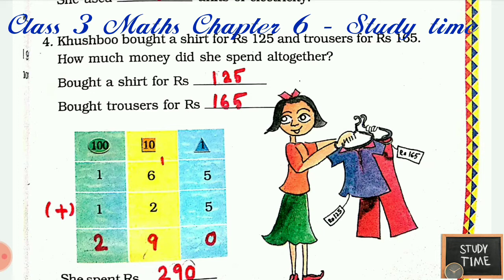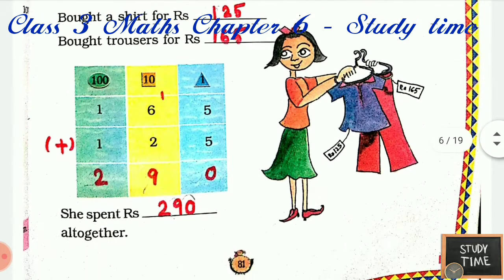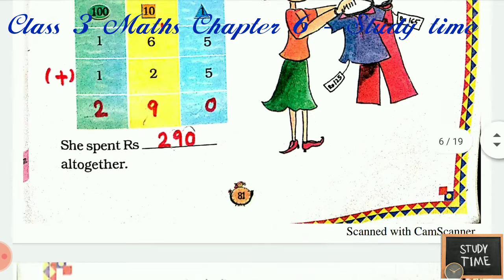Kushbu bought a shirt for rupees 125 and trousers for rupees 165. How much money did she spend altogether? All together means you have to add: 165 plus 125. If you add, you will be getting 290.